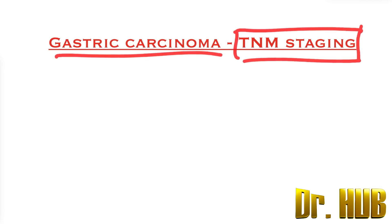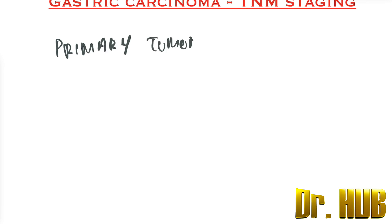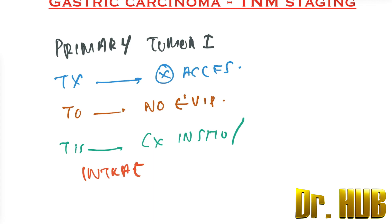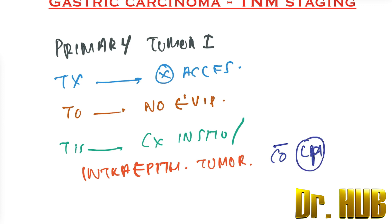Gastric carcinoma and its TNM staging. Let's look at the primary tumor, represented by T. As usual, TX stands for cannot be assessed. T0 is where there is no evidence. TIS means carcinoma in situ — it is also the intraepithelial tumor, without invasion of the lamina propria.